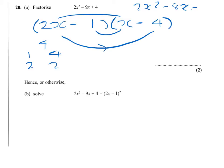Minus x, and then minus 1 times minus 4 gives me plus 4. And the minus 8x and the minus x gives me the minus 9x. So the answer is 2x minus 1 times x minus 4.